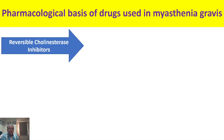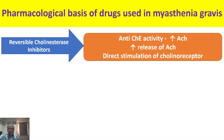In addition to increasing acetylcholine levels, these agents also increase the release of acetylcholine with each nerve impulse. Neostigmine can also directly stimulate the cholinoreceptor. This increased release with each nerve impulse and direct stimulation of the cholinoreceptor is seen especially with neostigmine. An alternative to neostigmine is pyridostigmine.